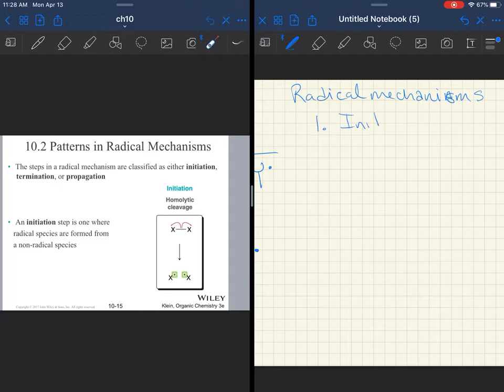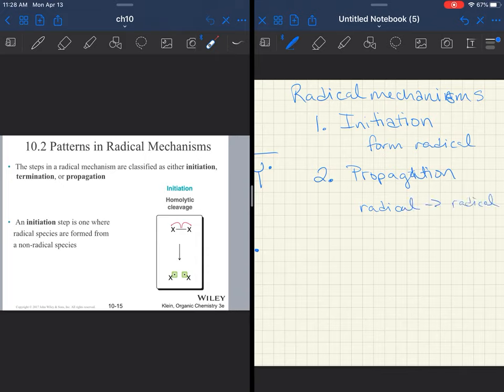What we're going to be interested in is with our radical mechanisms, especially the two main ones that we're going to cover in this chapter, there are three steps. There is initiation. Now it doesn't mean that there's only three steps. There's three groupings of steps. An initiation is where we're going to form the radical. Now this may be one or two steps. It just depends on what the initiation looks like.